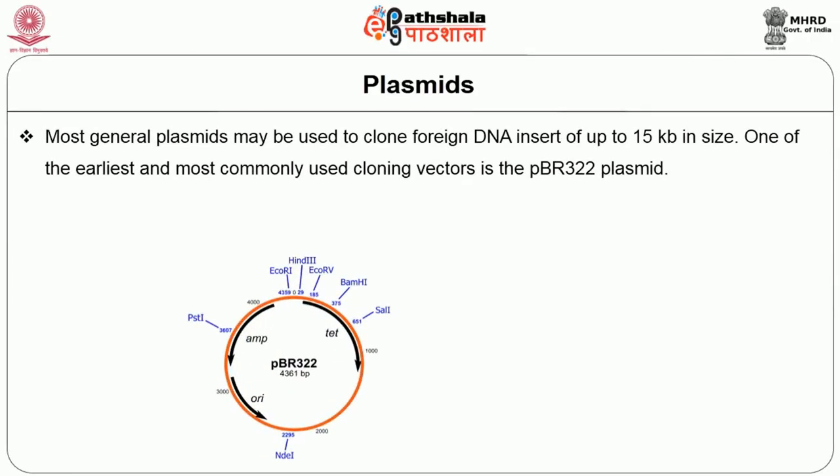These recombinant molecules can be autonomously replicated and propagated in suitable bacterial host cells, provided they still possess a site signaling where DNA replication can begin — also called the origin of replication, or ORI. In general, most plasmids may be used to clone foreign DNA inserts of up to 15 kb in size.